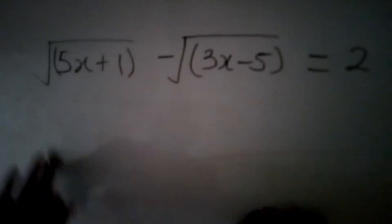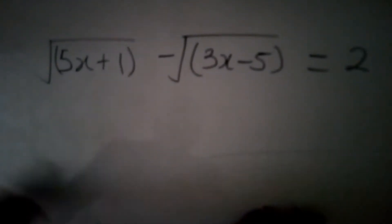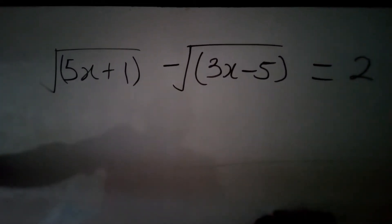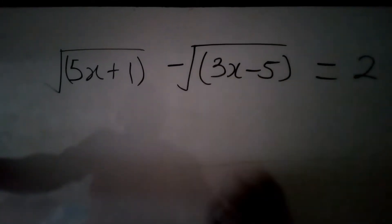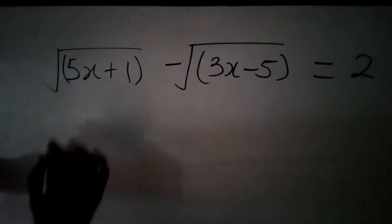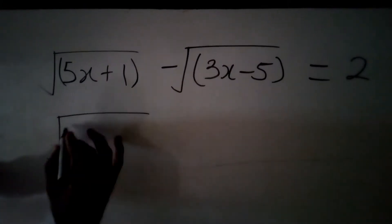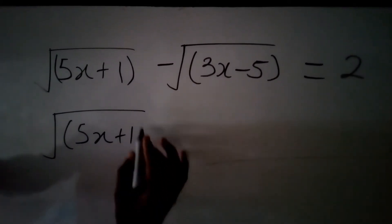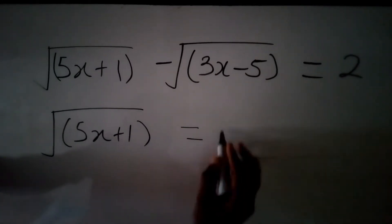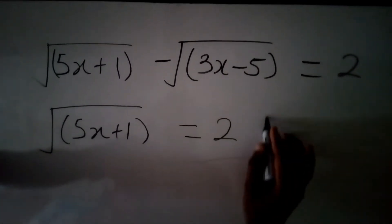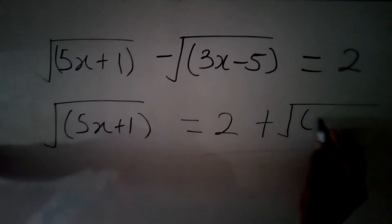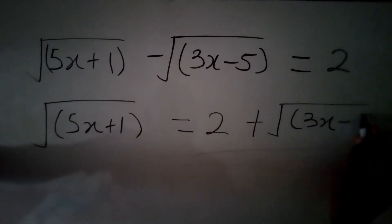So here our first step is to send one of these terms to the right hand side. I prefer we move the negative term to simplify things. So we get the square root of 5x plus 1 equal to 2 plus the square root of 3x minus 5.